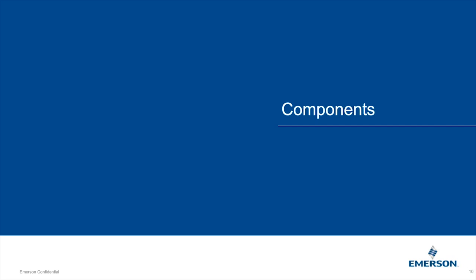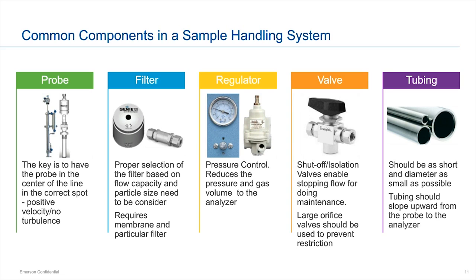Moving on to components. There's a wide variety used in a sample handling system. The first is the probe — it extracts what's flowing in your stream or pipe. There are many types: standard probes, direct drive probes, probes with heated regulators, probes with membranes. The right choice depends on your source conditions, temperature, pressure, and contamination in your system. We don't manufacture probes but work with several probe manufacturers and offer them through resale.